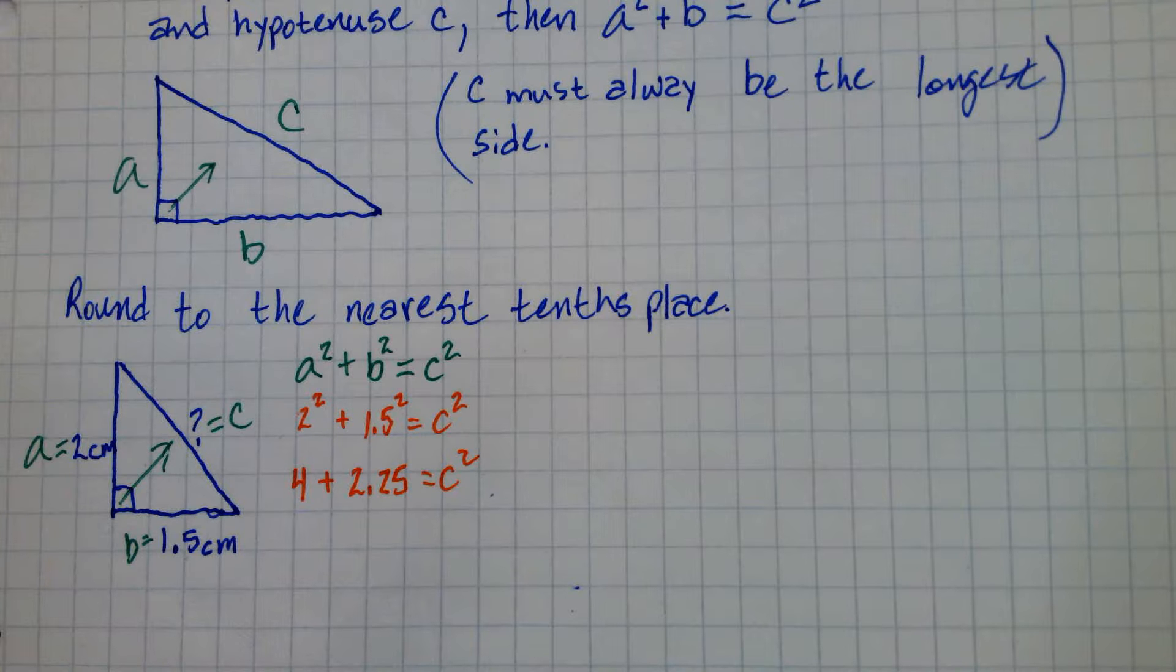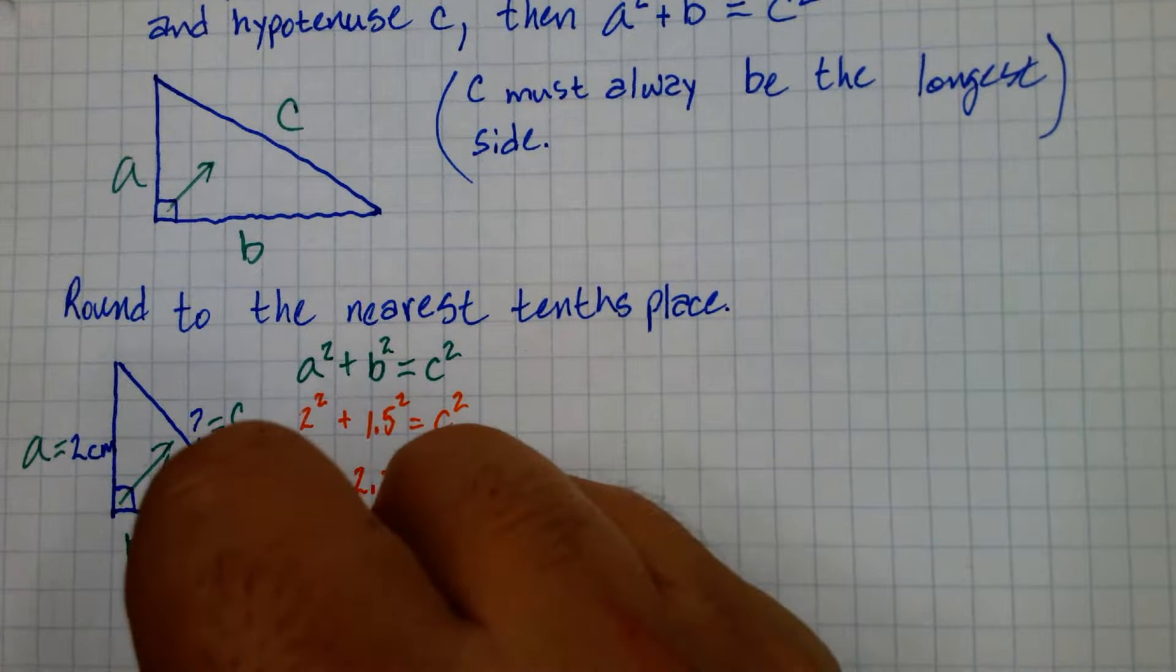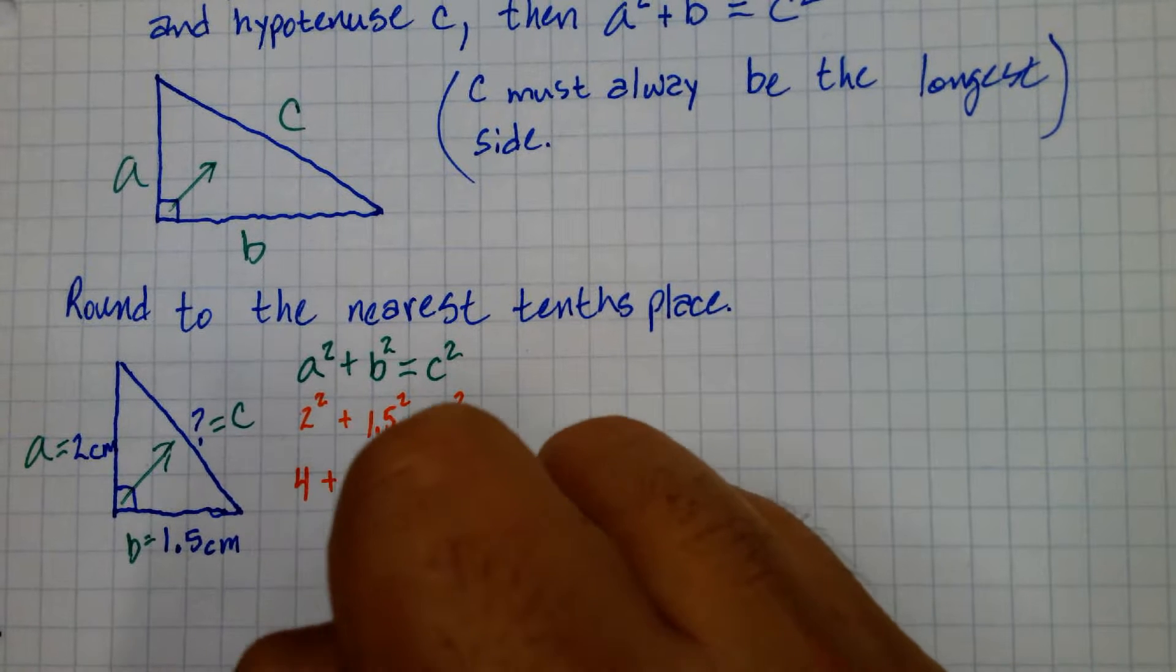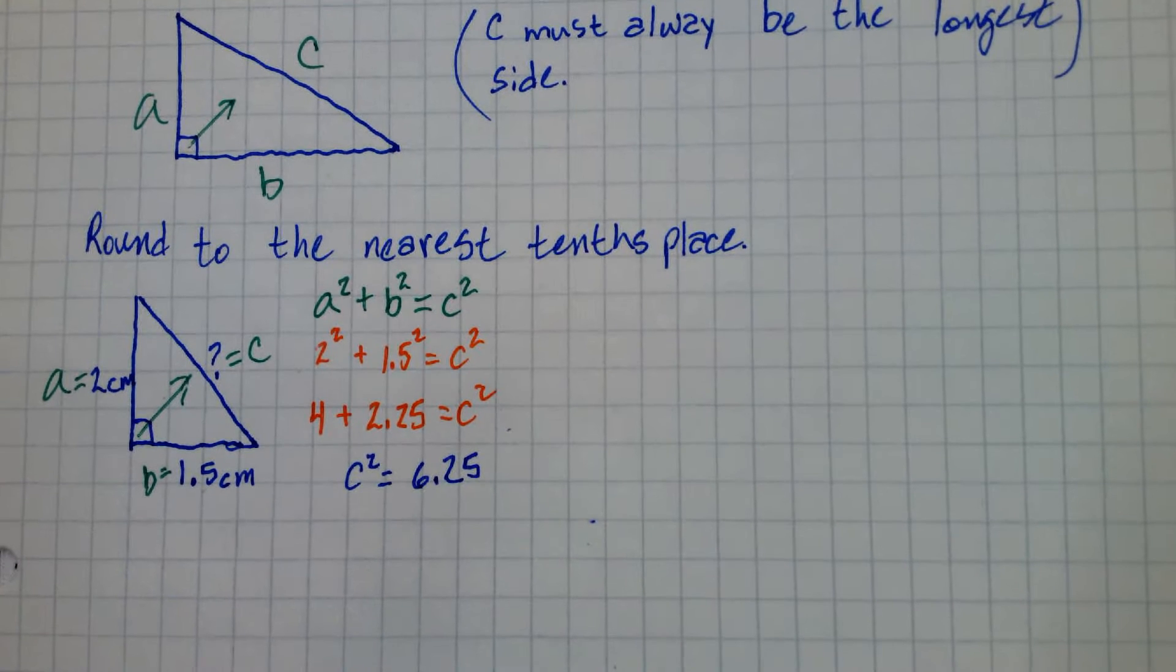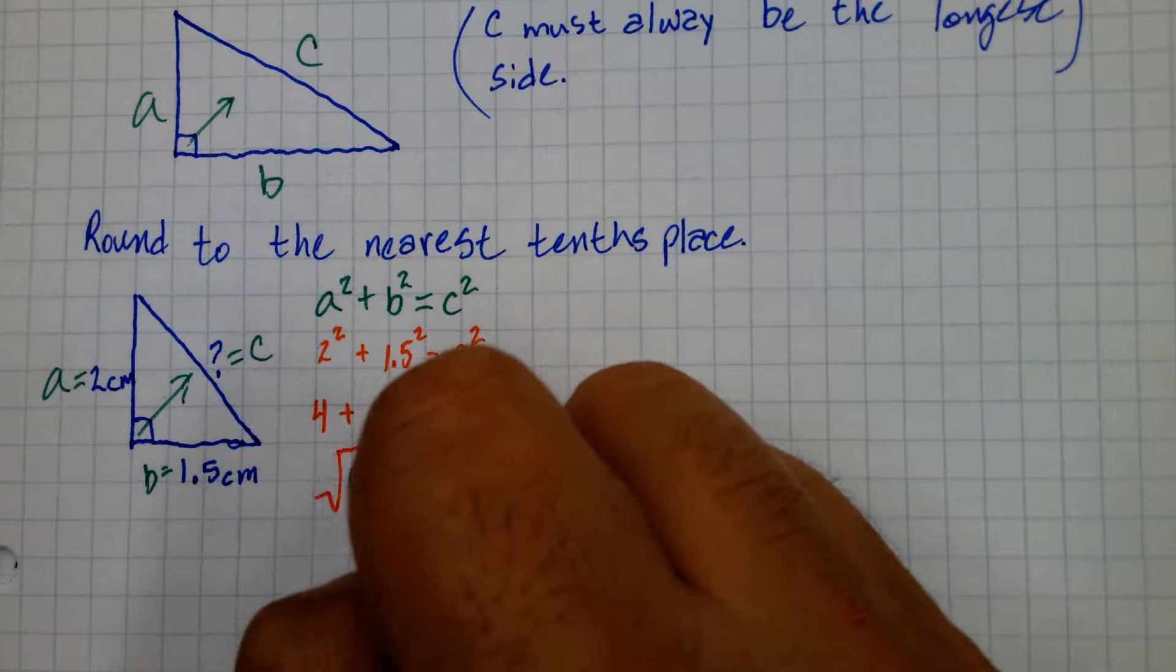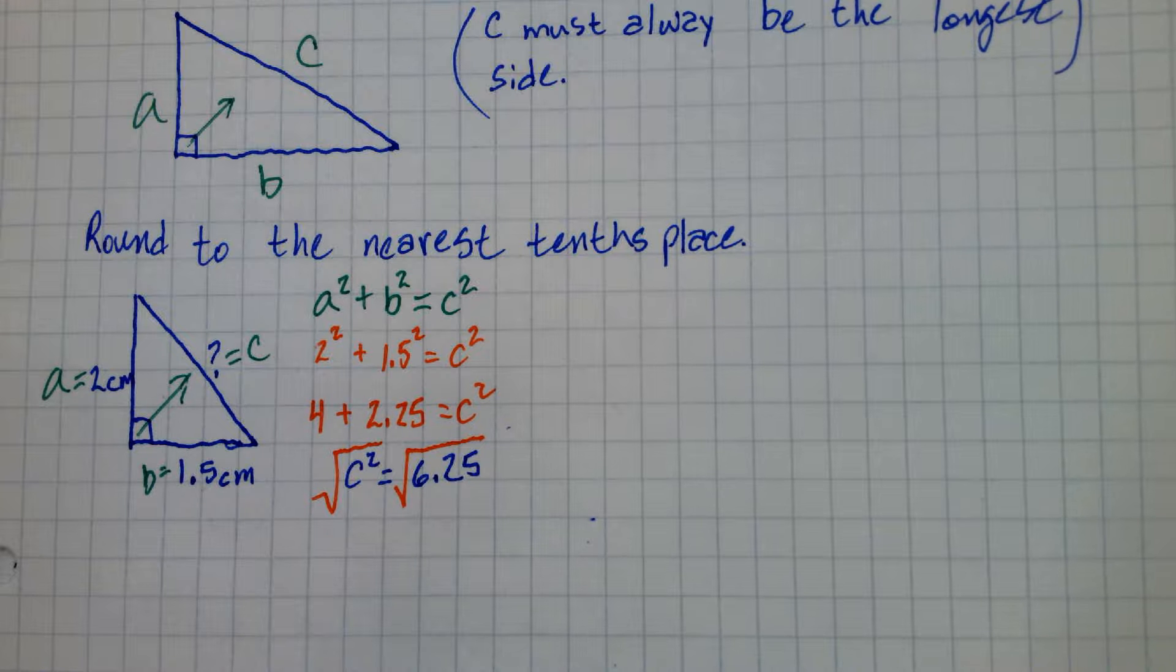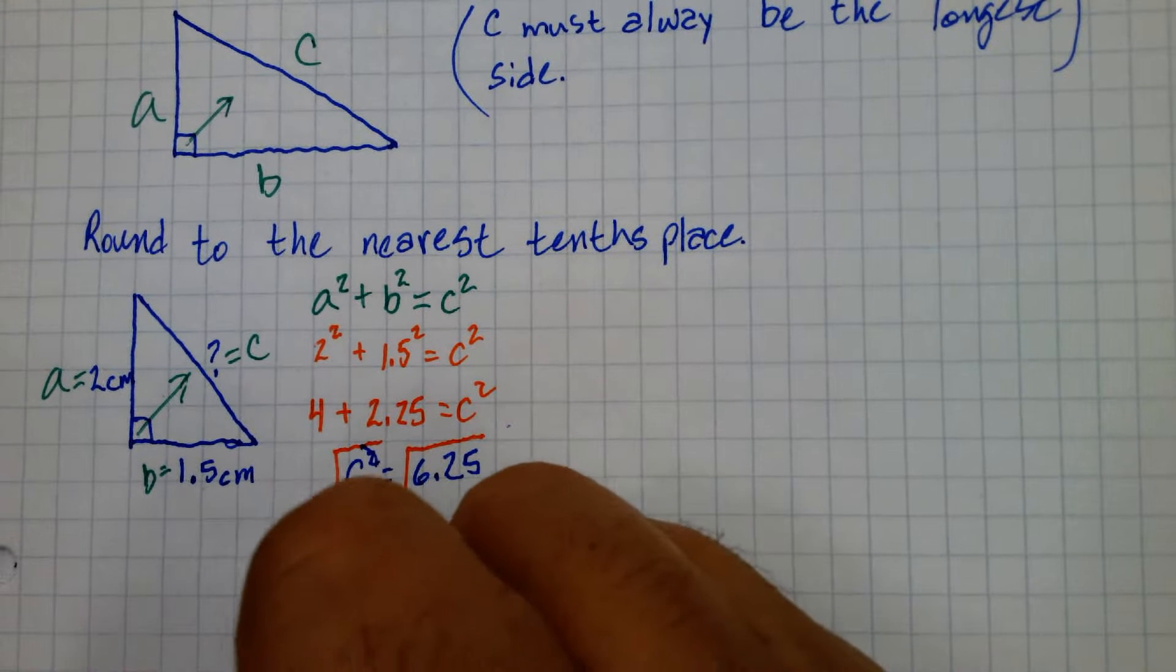So I'm just going to simplify that to 6.25 is C squared. So C squared equals 6.25. And we'll take the square root of that.